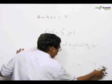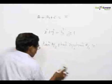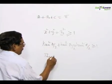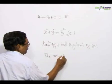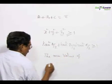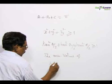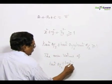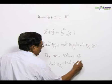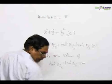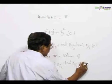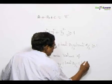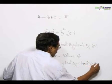Therefore, the minimum value of tan squared A by 2 plus tan squared B by 2 plus tan squared C by 2 equal to 1.